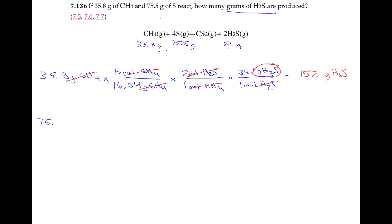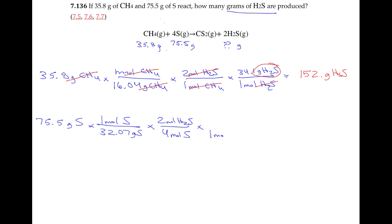So if I do the same exercise with 75.5 grams of sulfur: the atomic mass of sulfur is 32.07 grams per mole. From the balanced equation, for every four moles of sulfur, I form two moles of H₂S. And in every one mole of H₂S there are 34.1 grams of H₂S. When I do the math, I end up with 40.1 grams of hydrogen sulfide.